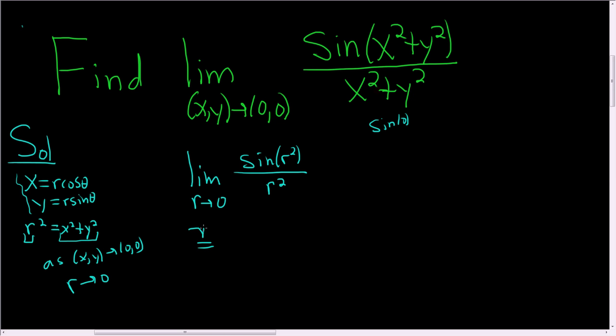So using L'Hôpital's, this is the limit as r approaches 0. And L'Hôpital says we take the derivative of each piece. So the derivative of sine is cosine. So we get the cosine of r squared times the derivative of the inside. So the derivative of r squared is 2r. And in the denominator, we take the derivative again, and we get 2r.